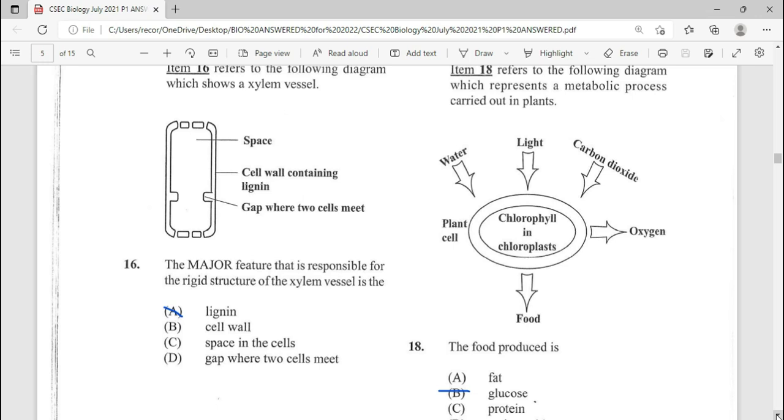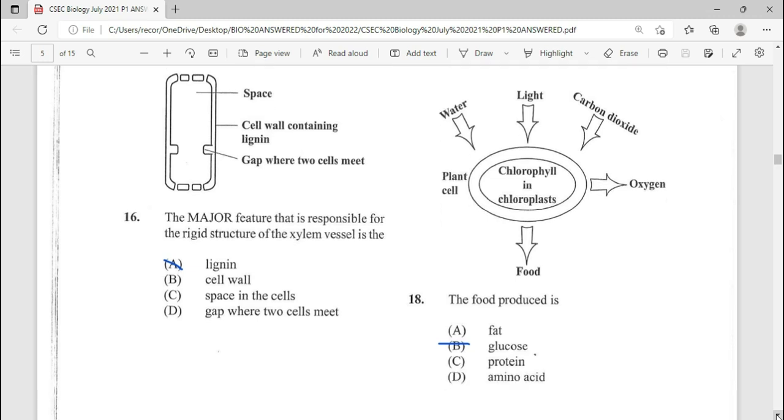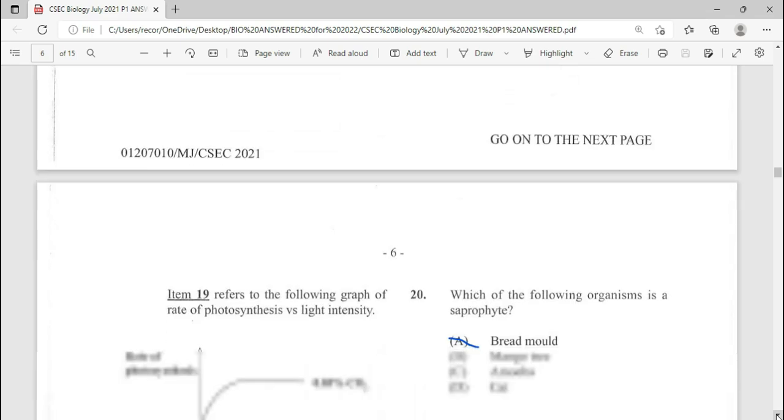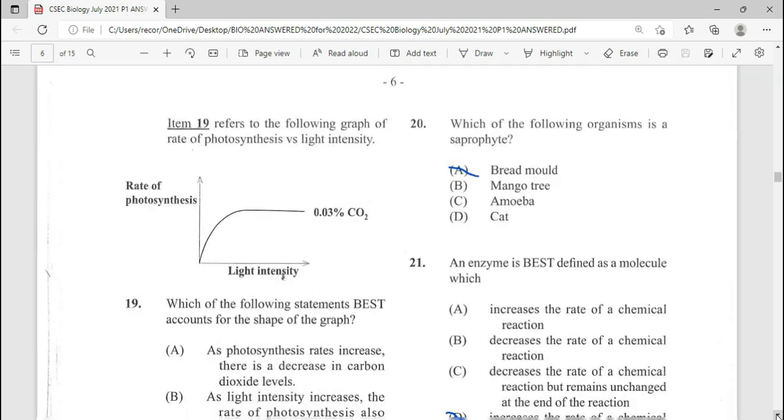Number 18, this is a repeated question. Number 18, with reference to the diagram we're looking at here, the food produced is, of course, glucose. Number 18, that is.